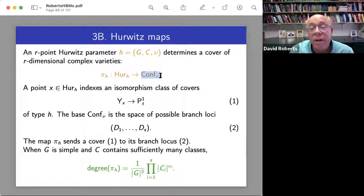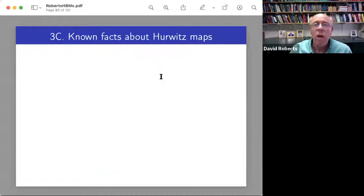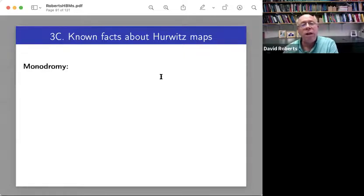Each of those would have a certain size, 30, 48, 108, whatever, depending on the group. Multiply all those numbers together. Divide by the square of the order of the group. You're going to get a big number.